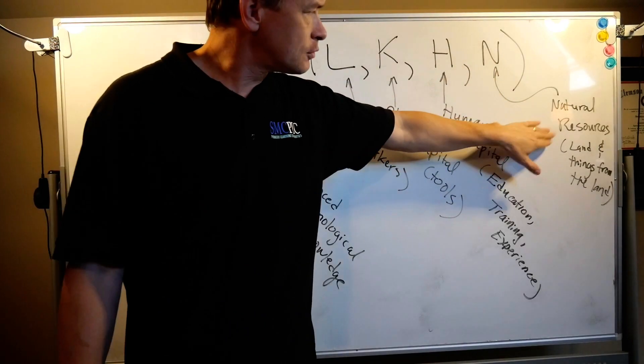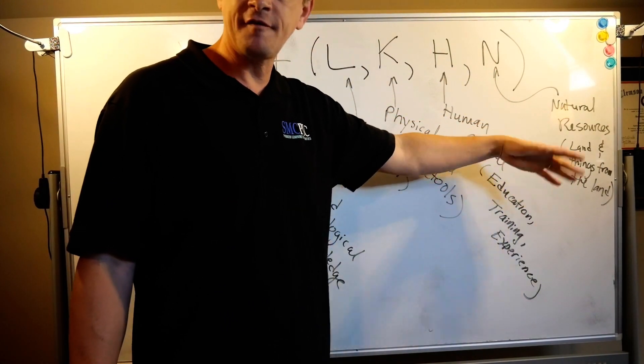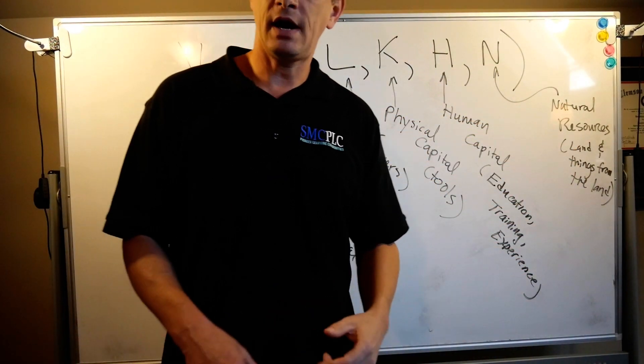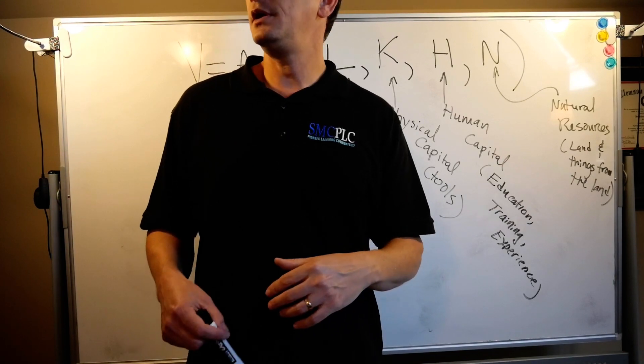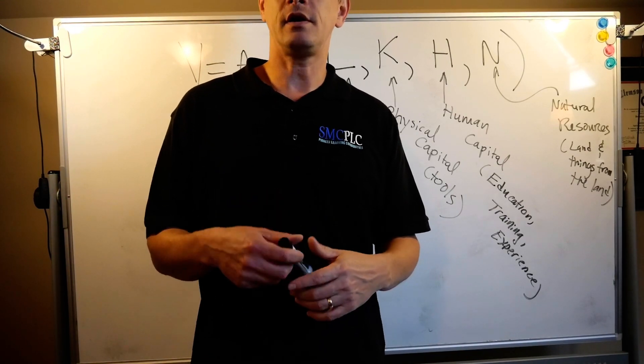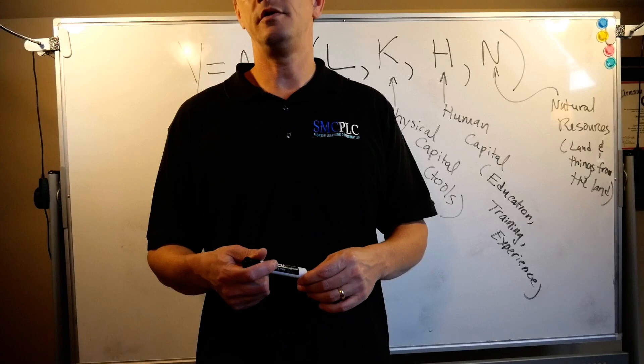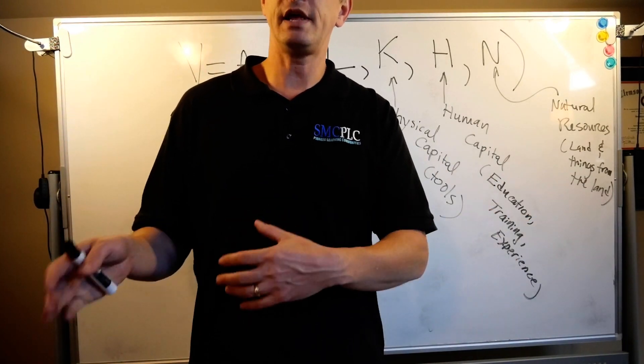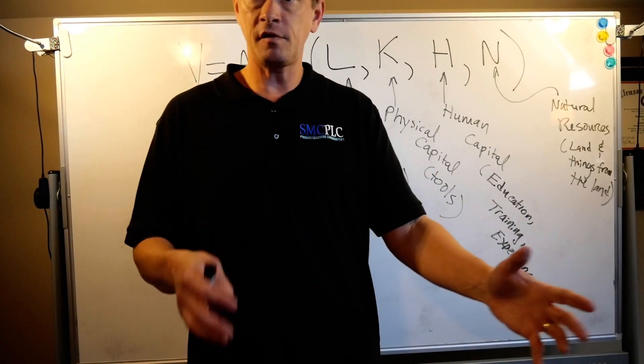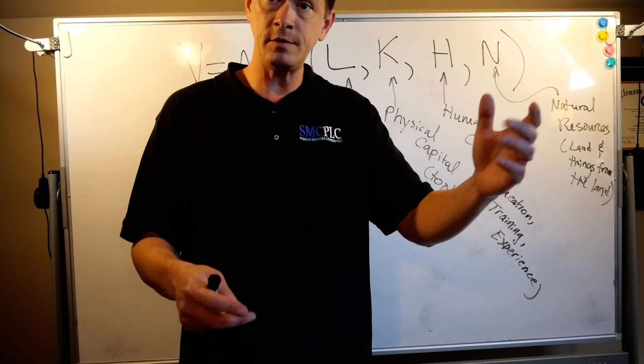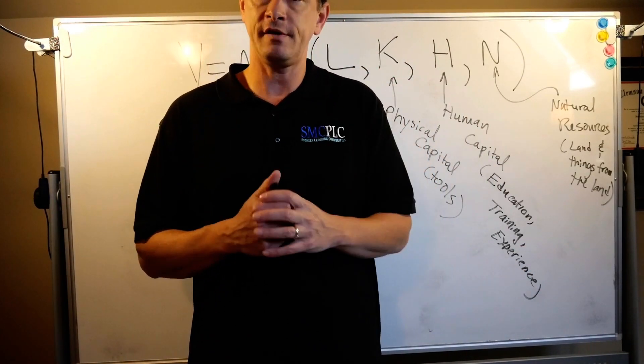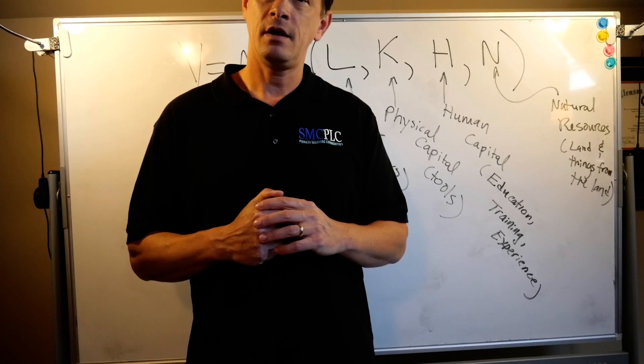Then N is natural resources. That's the land itself or things from the land. Could be hydroelectric power, minerals to make aluminum, rubber trees, whatever. That's stuff you take from the land. Could be wheat out of a farmer's field to make flour, which is used to make bread, which then you use to make peanut butter and jelly sandwiches.